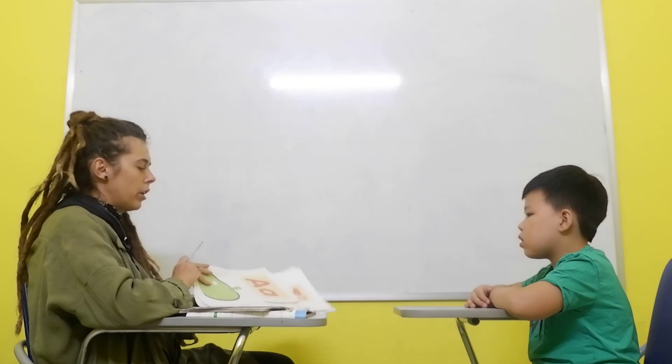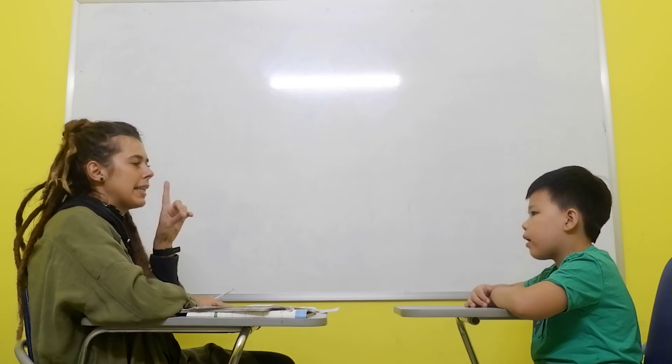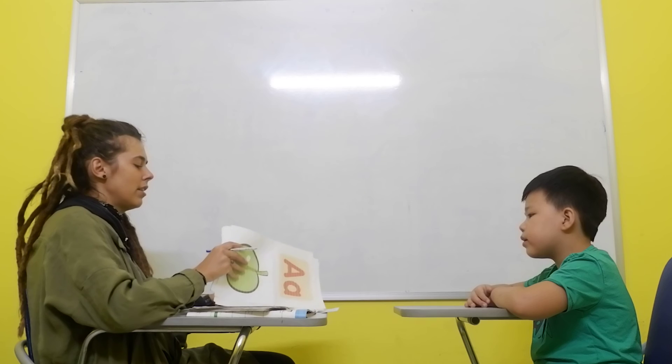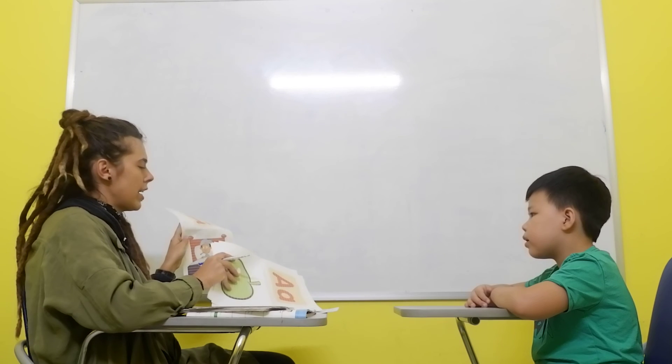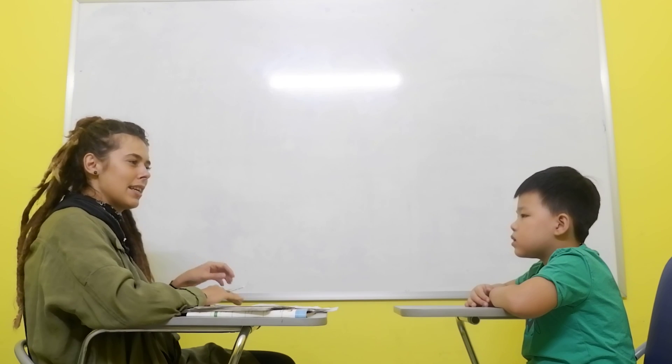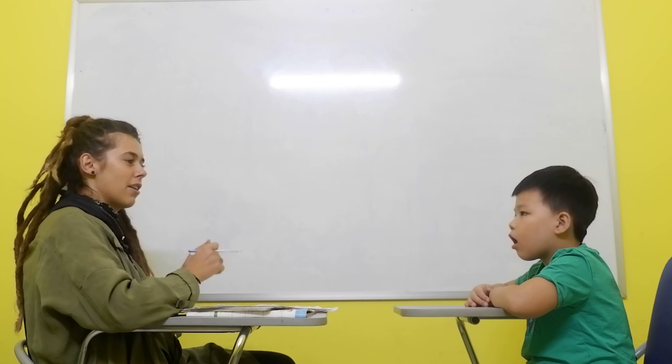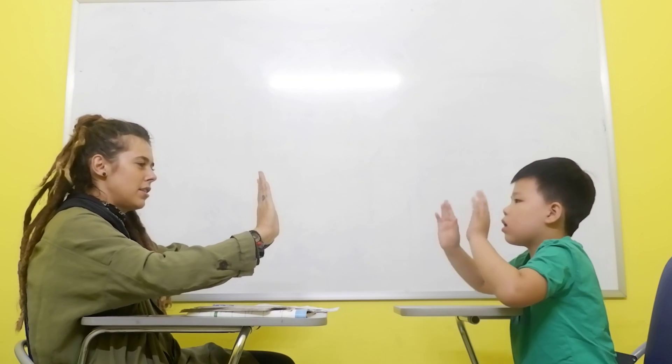I is for... Okay. What's the sound? I, I, I. In, in. What about C? Let's... A, B, C. C, C, cat. C, C, cock. Okay, that's correct. Thank you so much.